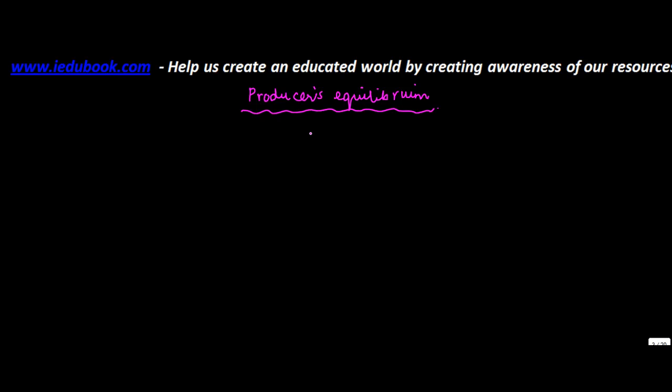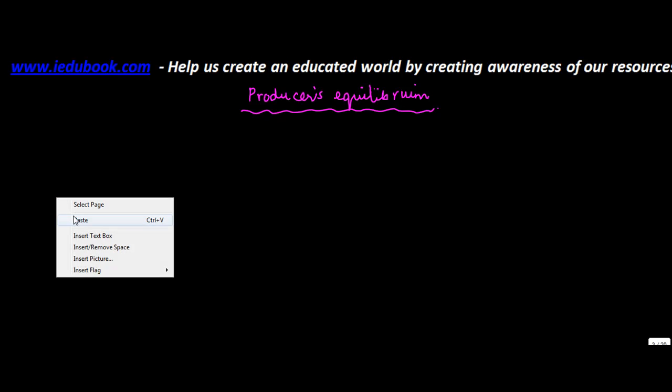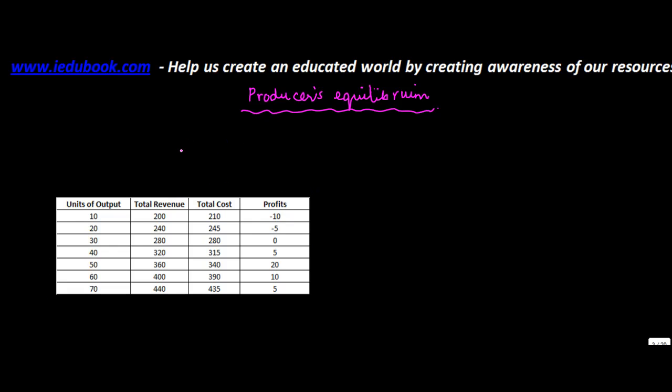Let's understand the concept of producer's equilibrium. This video is made on particular demand from one of our users. Now let us look at a particular table which I have just pasted. In this table, there are units of output: 10, 20, 30, 40, 50, 60, 70. There is total revenue, total cost, and profits.